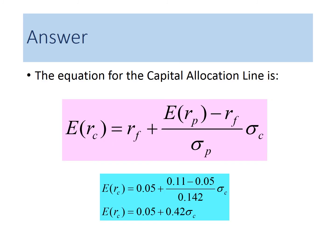We can also derive the equation of the capital allocation line using the concept of a linear equation, y equals a plus bx. The intercept represents the risk-free rate of 5%, and the slope of the line is represented by the Sharpe ratio, which is 0.42.